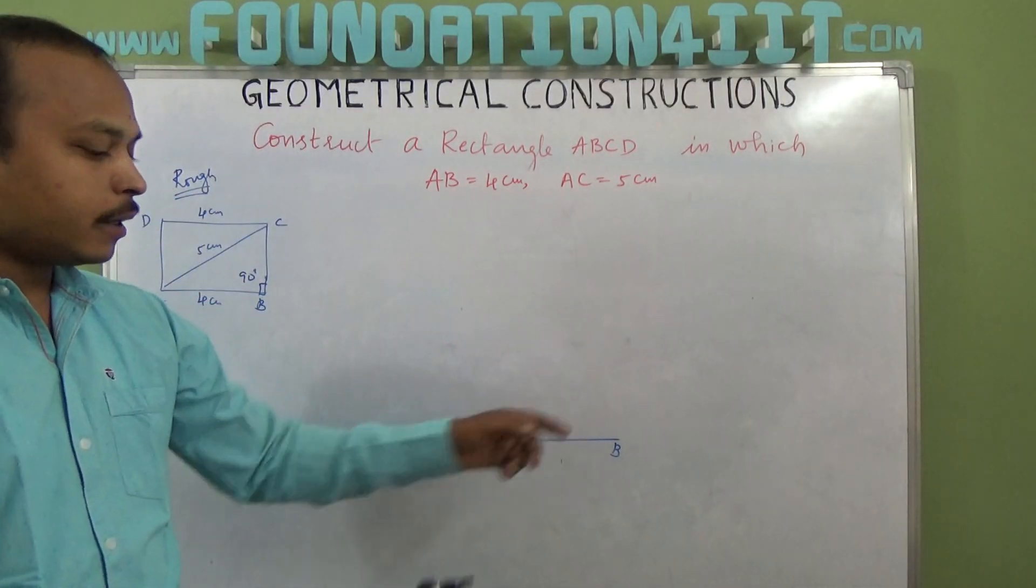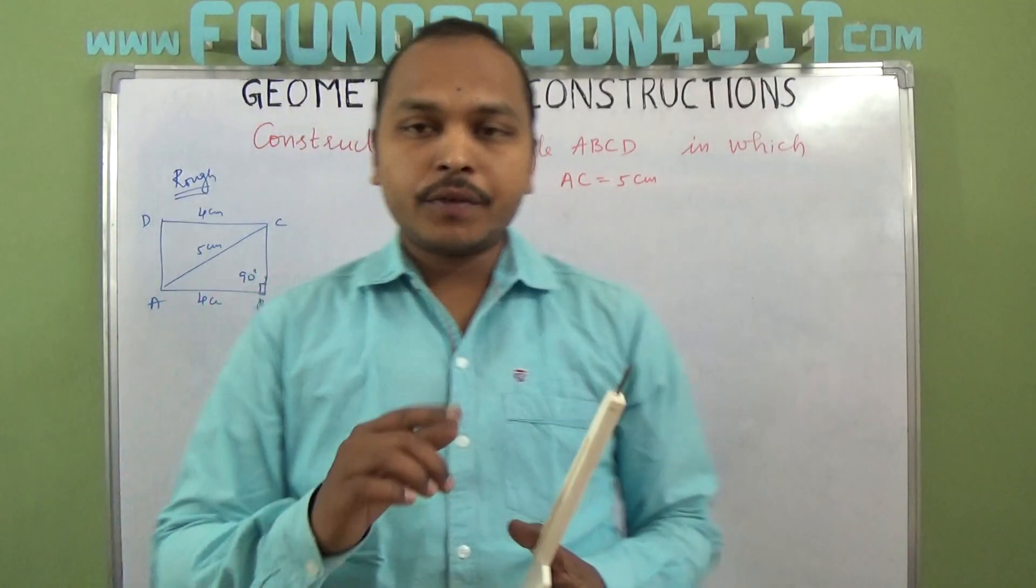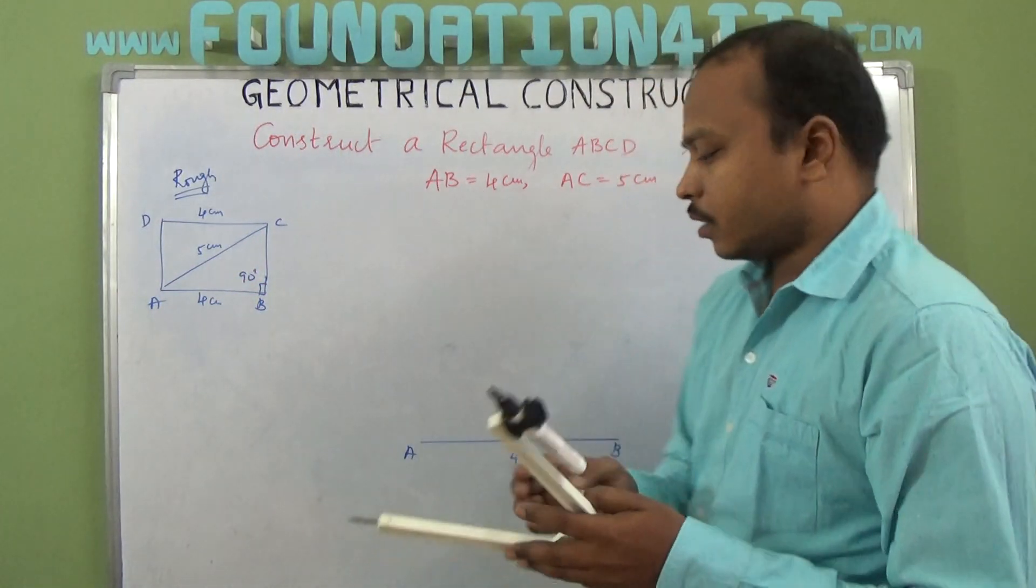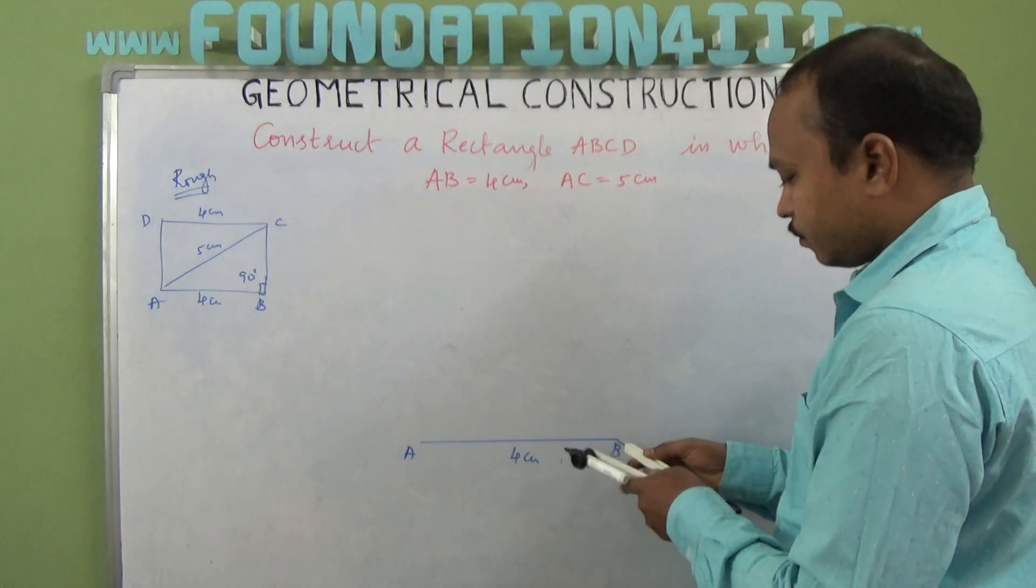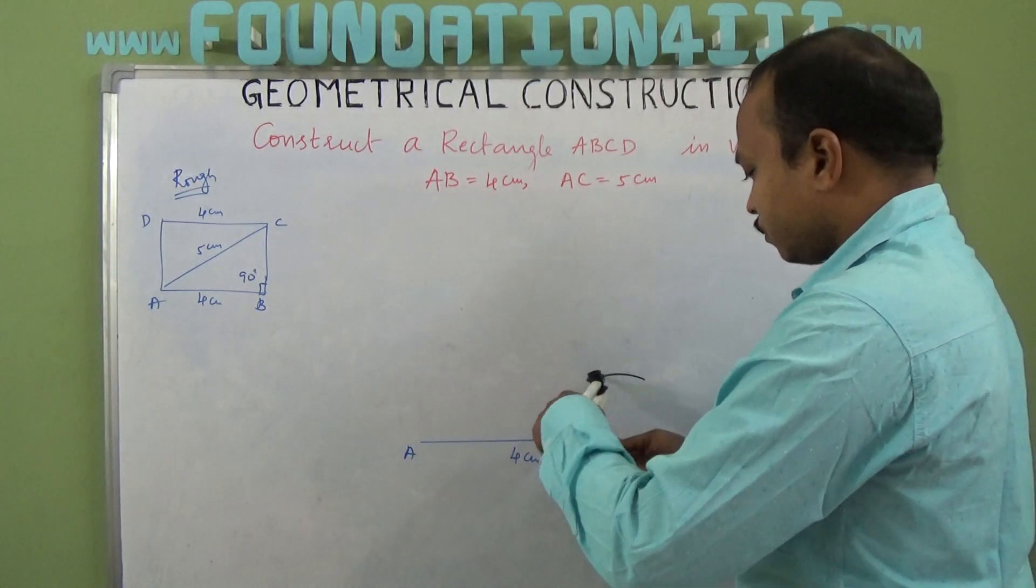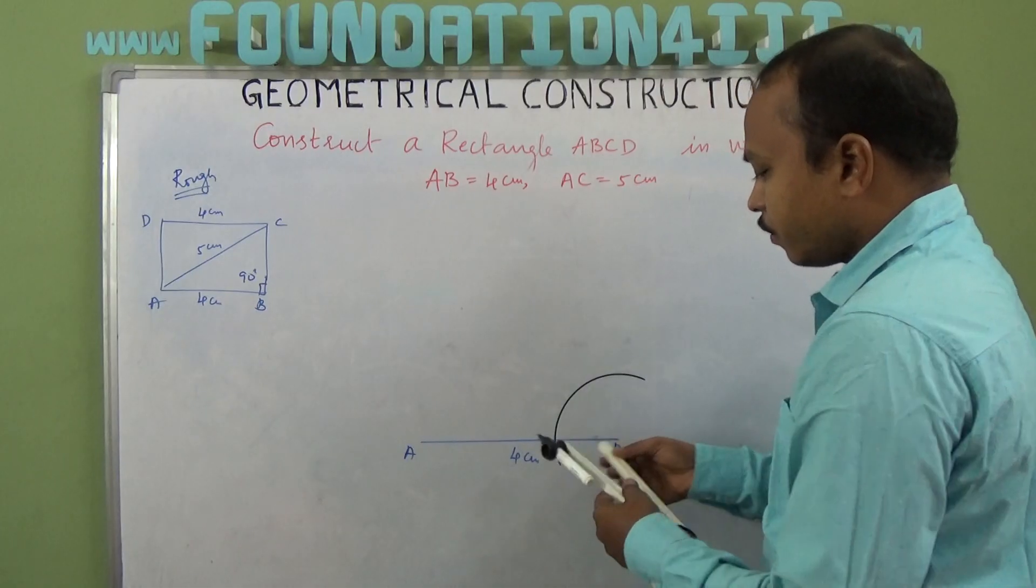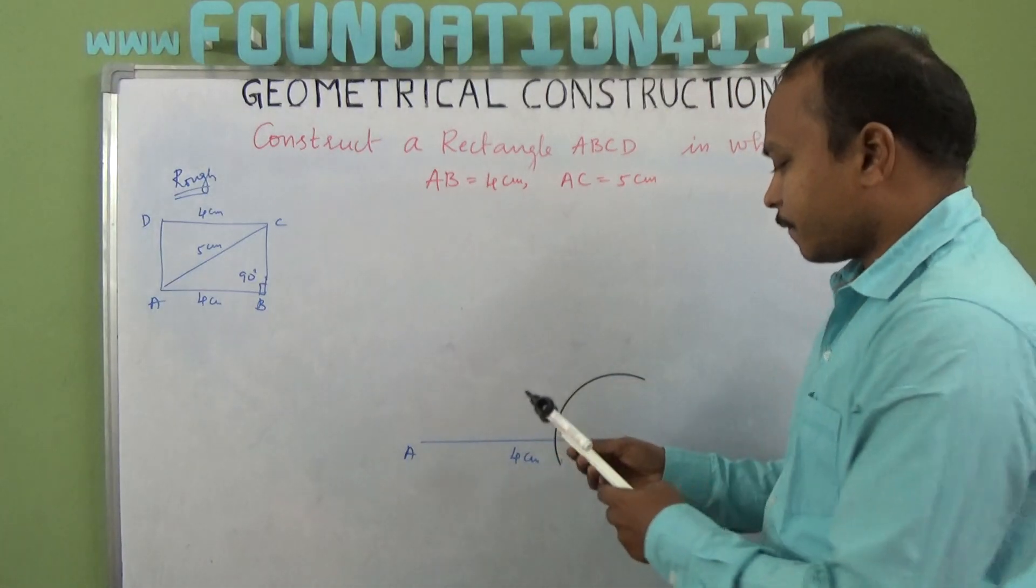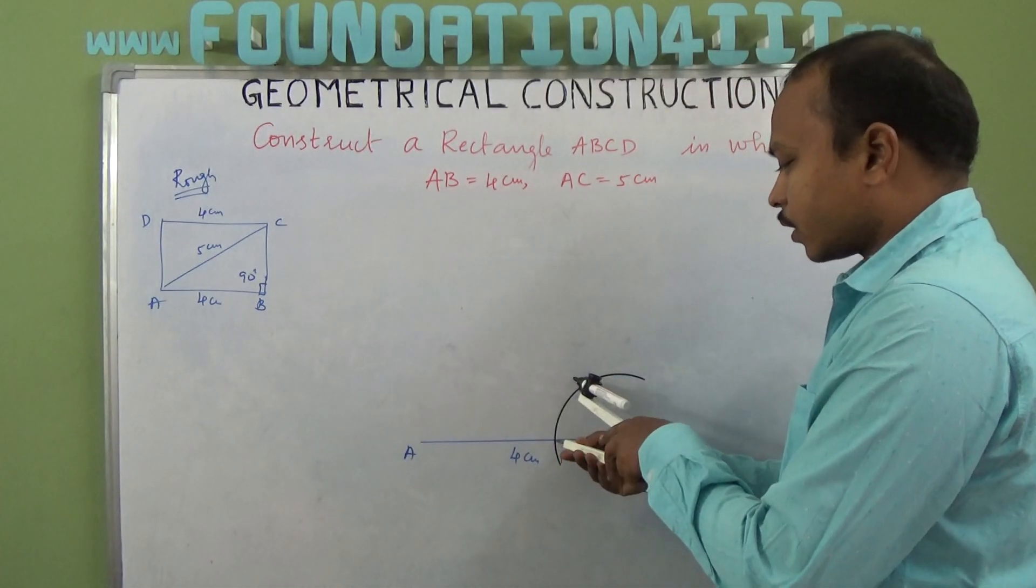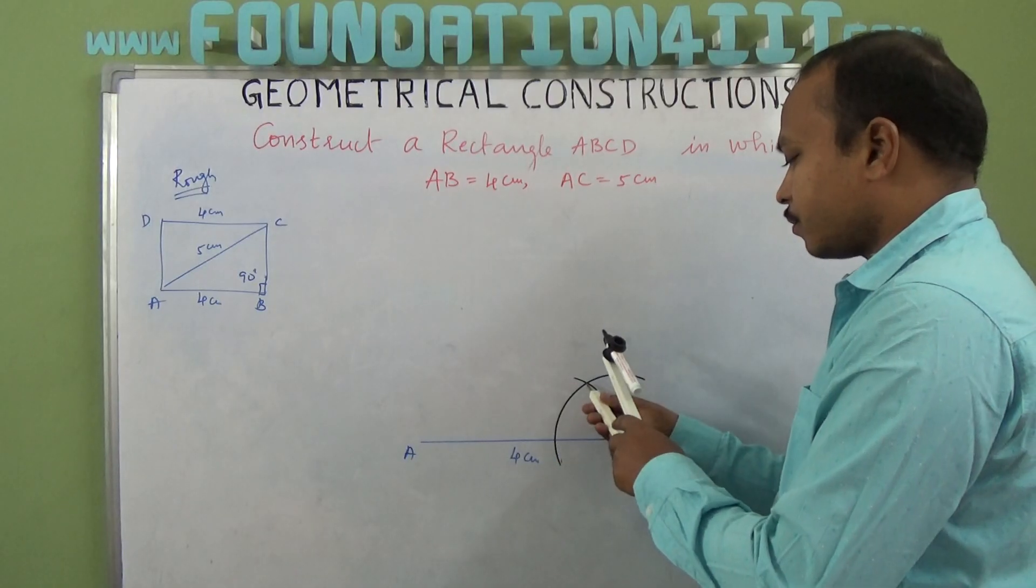Now A to B. At B I need to construct 90 degrees because every angle is 90 degrees in a rectangle. So draw an arc first.